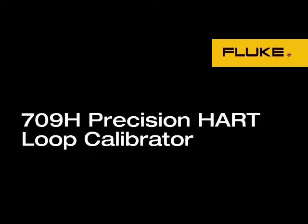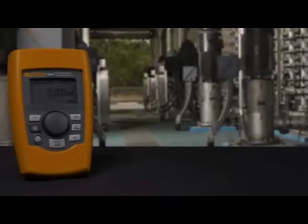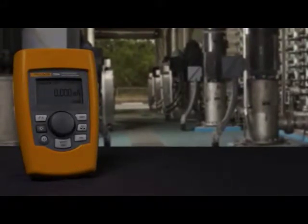The Fluke 709 loop calibrators are a new, easy-to-use family of accurate and dependable loop calibrators. The 709 is a precision loop calibrator, and the 709H adds HART communication.